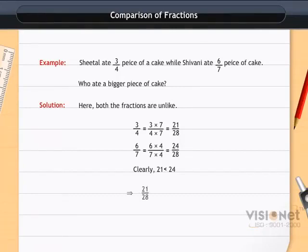So, 21 by 28 is less than 24 by 28, and 3 by 4 is also less than 6 by 7. Hence, Shivani ate a bigger piece of cake.